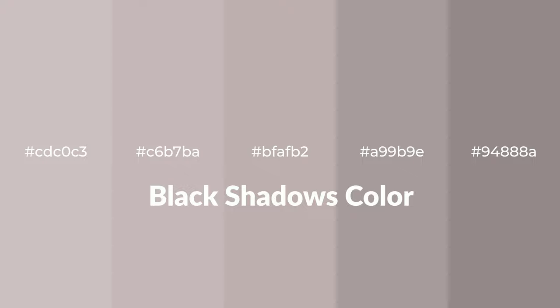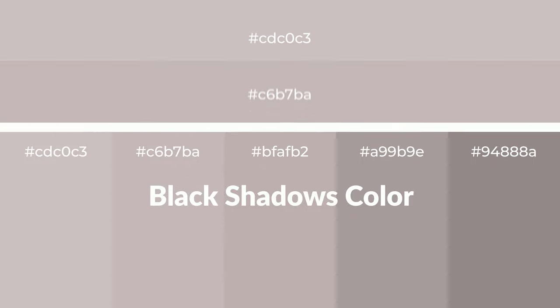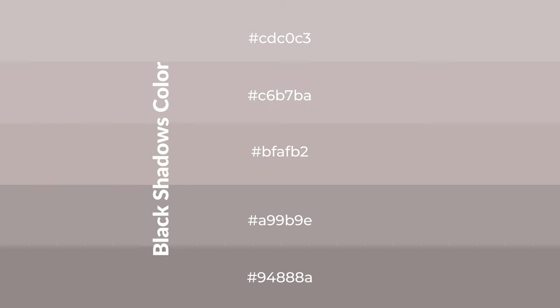To generate tints of a color, we add white to the color. Tints create light and exquisite emotions. To generate shades of a color, we add black to the color. Shades are used in patterns, 3D effects, and layers, and they create depth and drama.